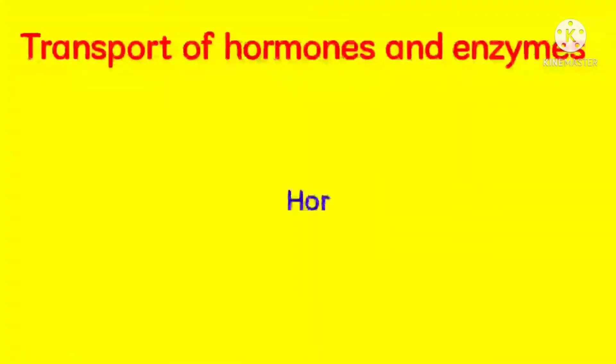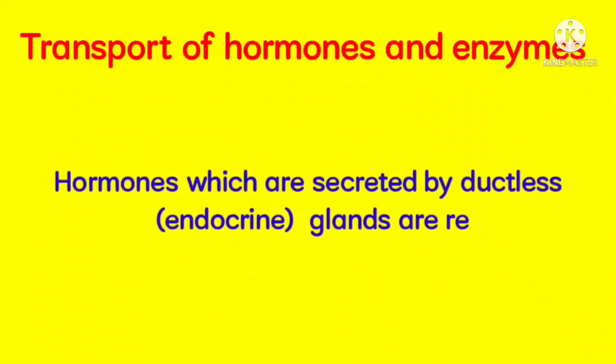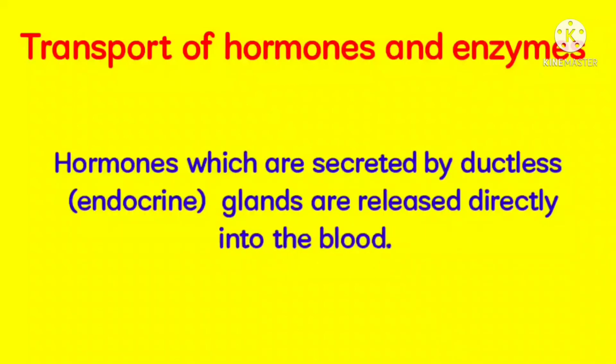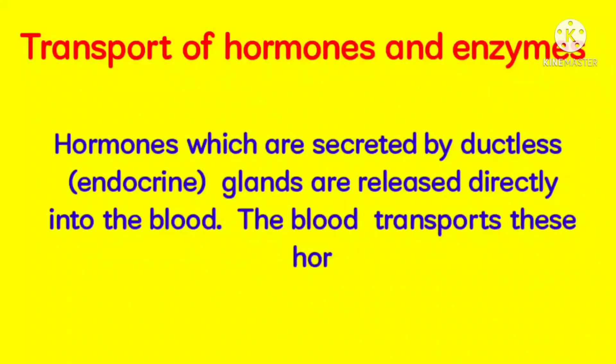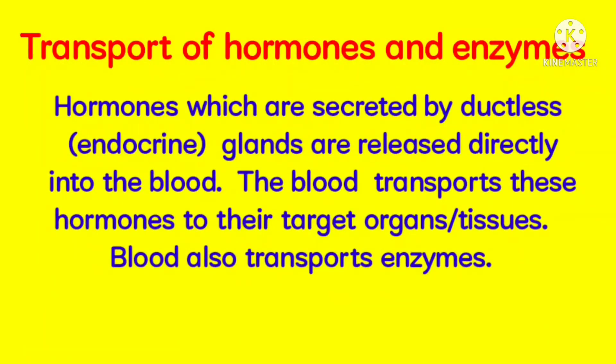Fourth one is Transport of Hormones and Enzymes. Hormones which are secreted by ductless endocrine glands are released directly into the blood. The blood transports these hormones to their target organs or tissues. Blood also transports enzymes.